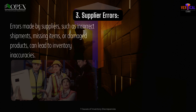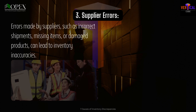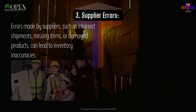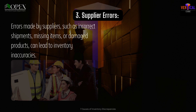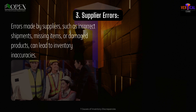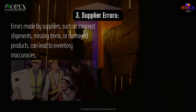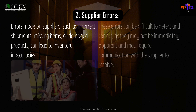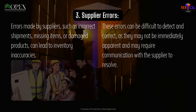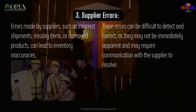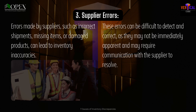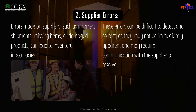3. Supplier errors. Errors made by suppliers, such as incorrect shipments, missing items, or damaged products, can lead to inventory inaccuracies. These errors can be difficult to detect and correct, as they may not be immediately apparent and may require communication with the supplier to resolve.